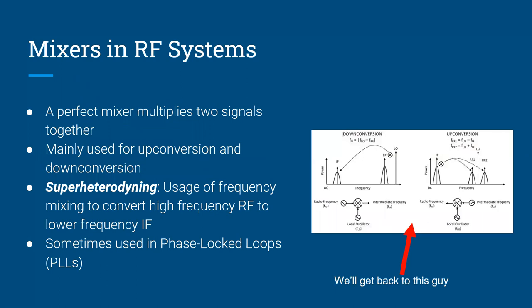Mixers. So the ideal mixer essentially multiplies two signals together. We talked about what use that has in the communication system, mainly for up-conversion and down-conversion. I'll review again the mechanism of how that works. There's a term you might hear called super heterodyning or heterodyning. The idea is that you receive a high frequency signal on your antenna — like a radio transmission — and down convert that to a lower frequency called an intermediate frequency, or IF, using a mixer.